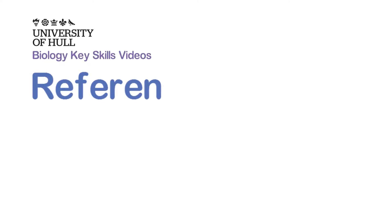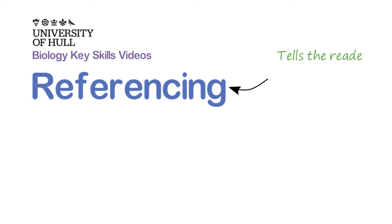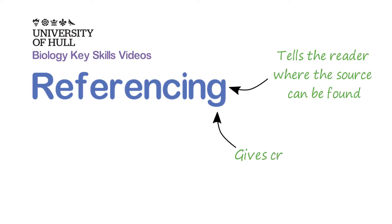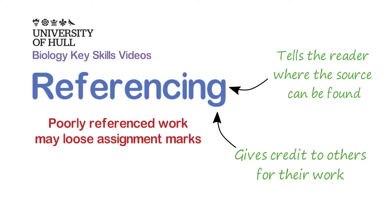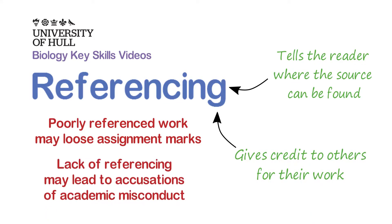One of the most important skills you're going to need for university assignments is how to reference your work correctly. References tell your reader where to find the sources you based your work on and also gives credit for the work that other people have done. If you don't reference properly then you might lose marks on the assignment and you might also be accused of academic misconduct, as without a reference you're effectively saying that the material is your own when it's actually someone else's, so it's really important to get this right.